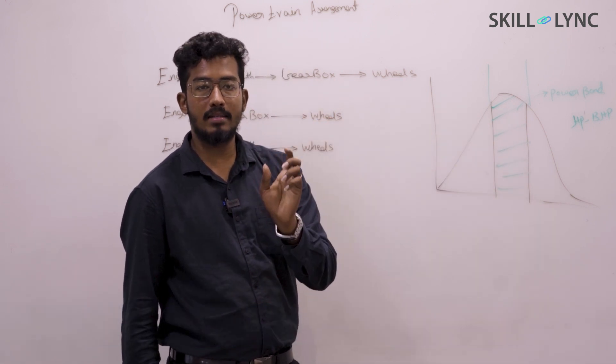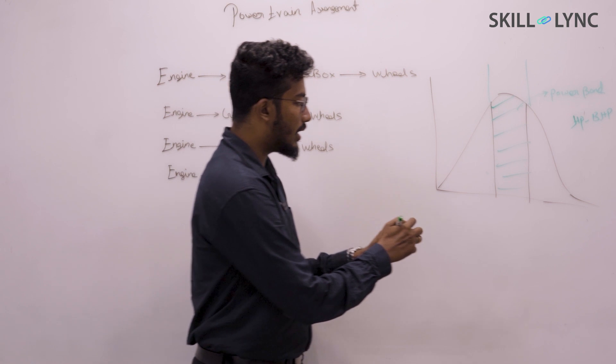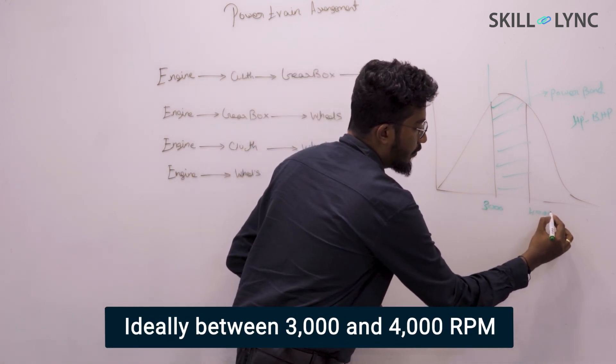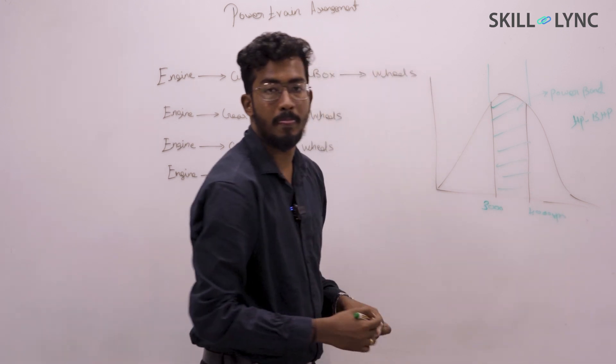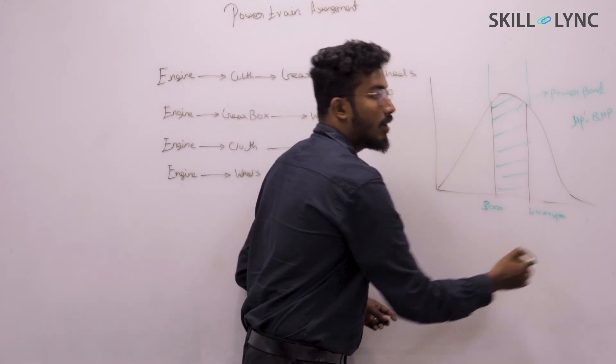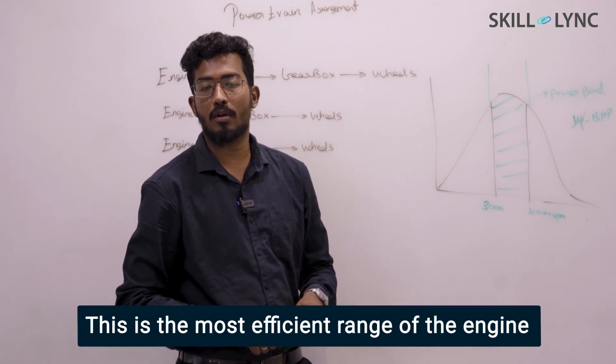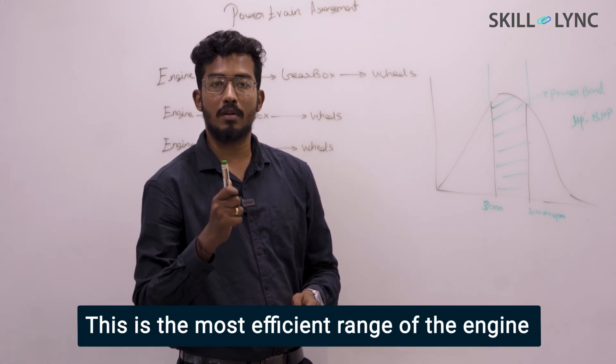This power band is the RPM, ideally between 3000 to 4000 RPM, which is the range in which you tend to get the maximum amount of efficiency from your engine.